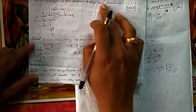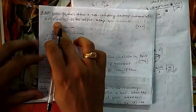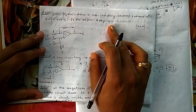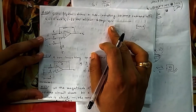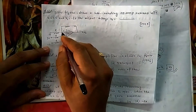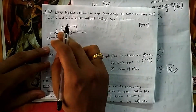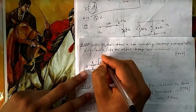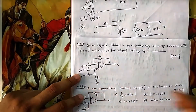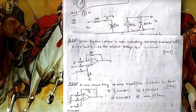In question 61, the given figure shows a non-inverting op-amp summing amplifier with inputs V1, V2, and we need to find the output voltage. Note that the feedback resistor is 2R — please modify the question sheet accordingly.